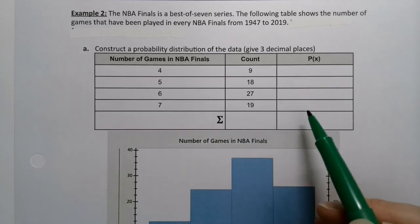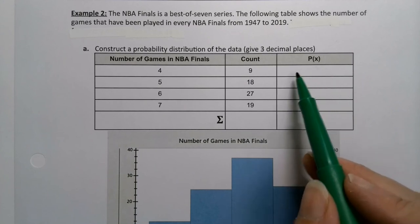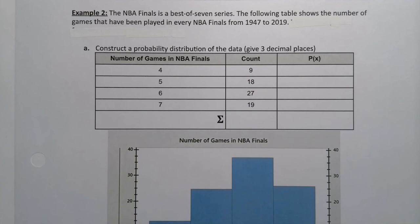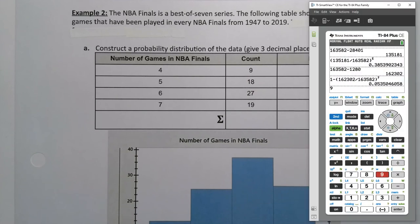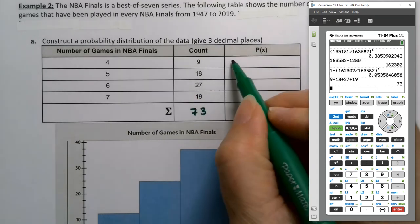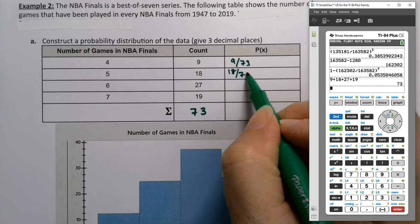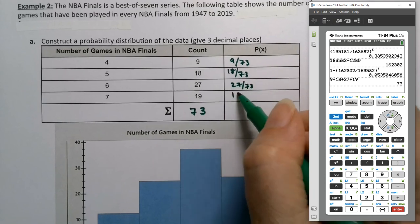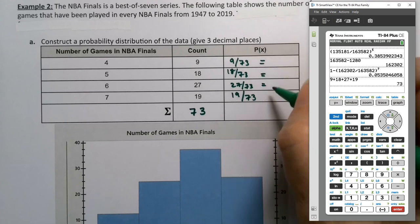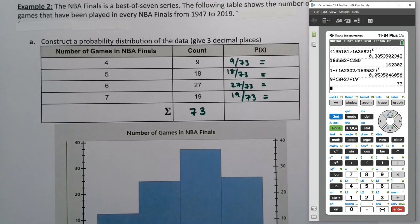Now we want to find the probability here. So the probabilities, what we need to do is we need to find the total for the number of NBA Finals series that have happened to determine the big winners in the NBA. So I'm going to add 9 plus 18 plus 27 plus 19. And I get a total of 73 here. So then to find the probability of each of these individual areas, I would take 9 and divide it by 73, 18 and divide it by 73, 27 and divide it by 73, and 19 and divide it by 73.